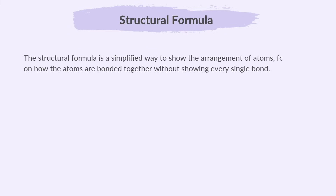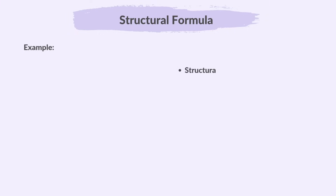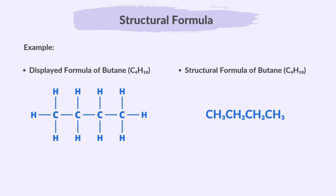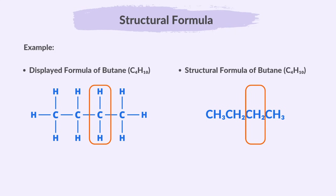The structural formula is a simplified way to show the arrangement of atoms, focusing on how the atoms are bonded together without showing every single bond. With reference to our previous example, the structural formula of butane simplifies the displayed version, showing the key bonds between atoms like this: CH3, CH2, CH2, and CH3. This focuses on the carbon chain and groups without displaying all individual bonds.